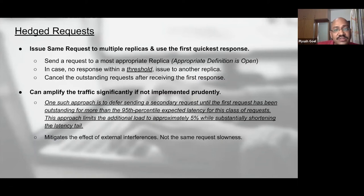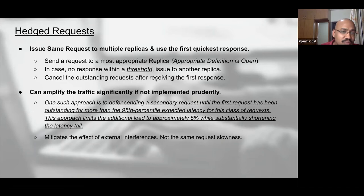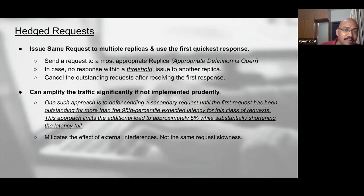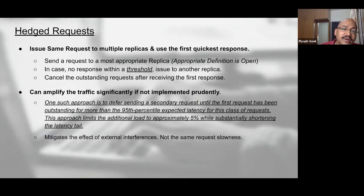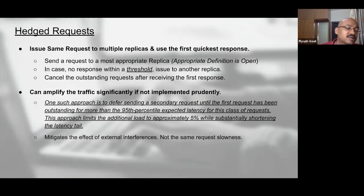If a response is not received within a threshold, we issue the request to another replica. It's very natural that if you're issuing multiple requests for processing a single top-level request, you're amplifying the traffic to your downstream systems by a large degree. One approach mentioned is: rather than blindly firing multiple copies of your request, send the request to the most appropriate replica and wait for the 95th percentile response latency for that class of requests from the target service. If you don't get a response within that threshold, fire the second or third request to secondary or tertiary replicas.